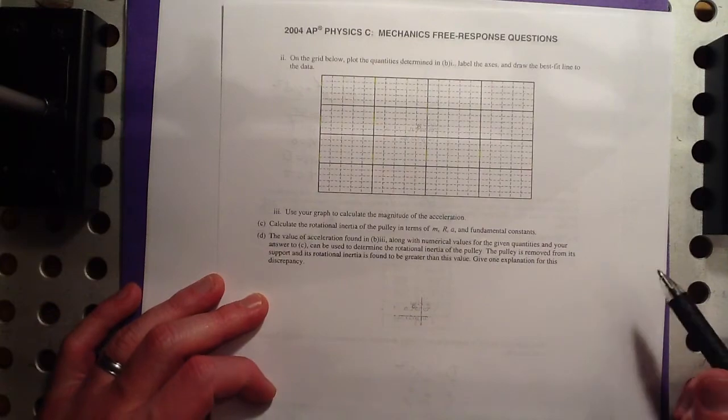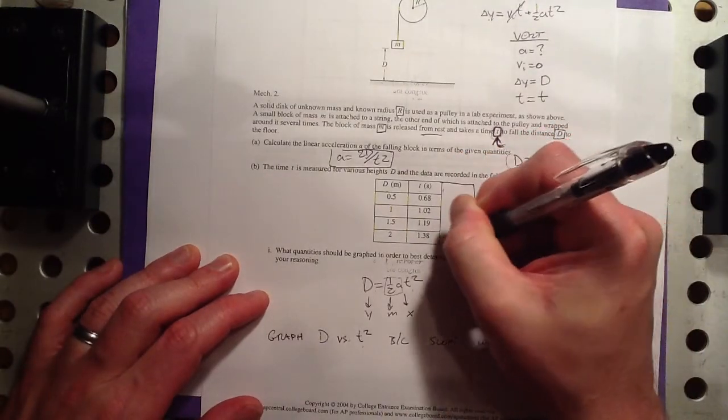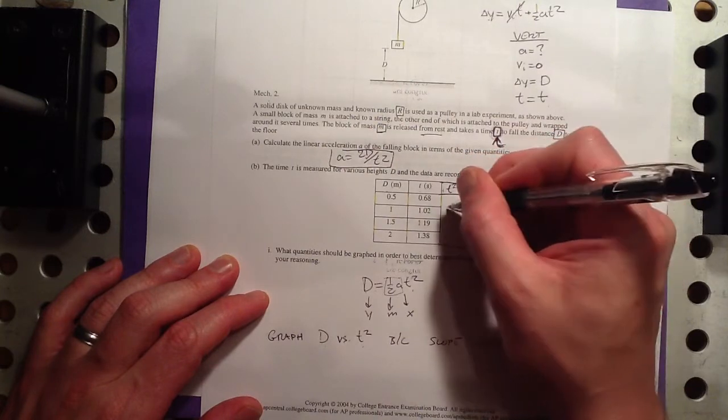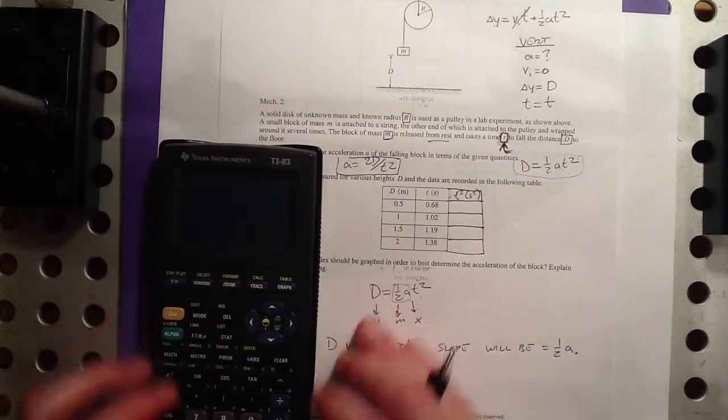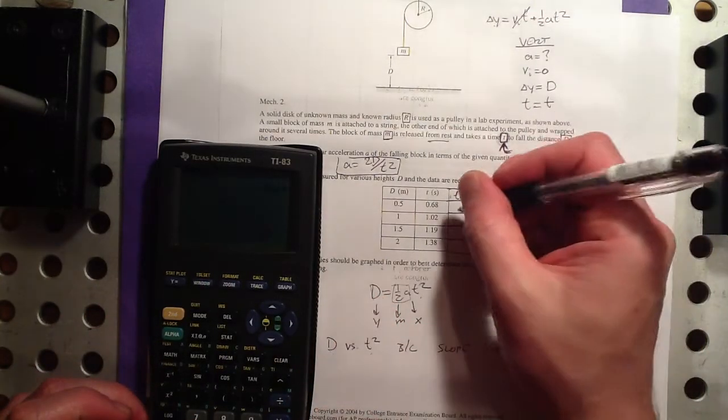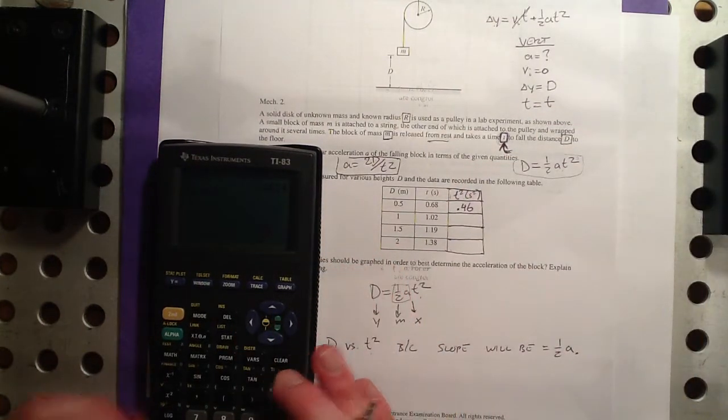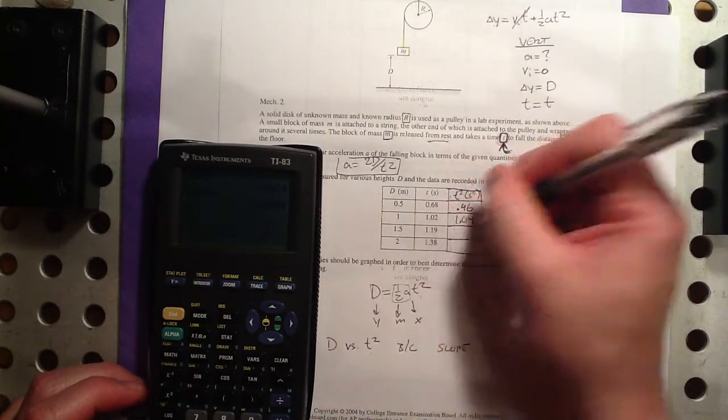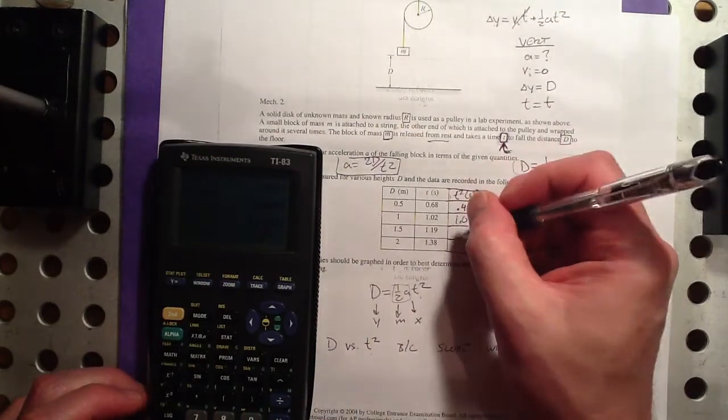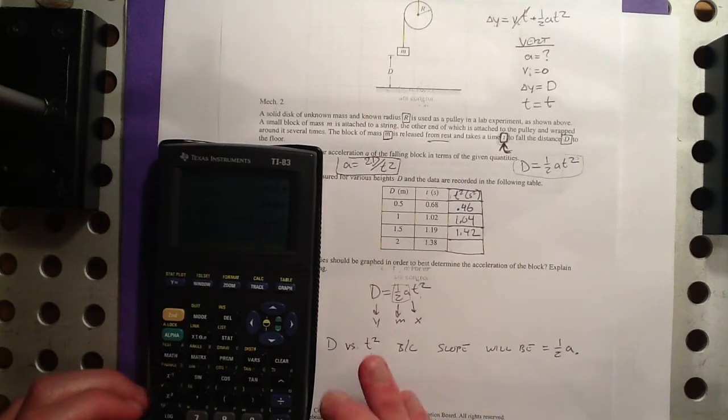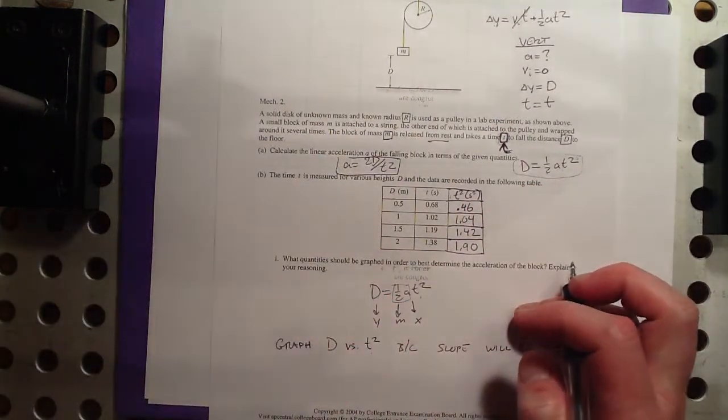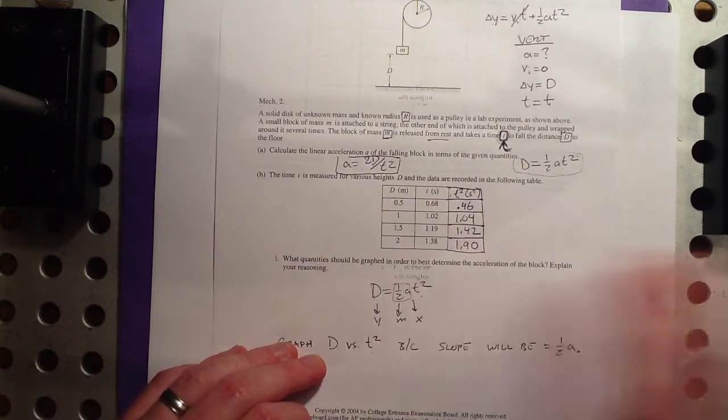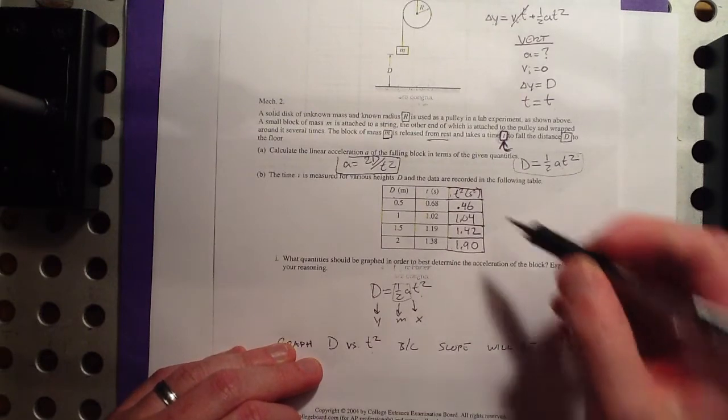On the grid below, plot the quantities determined in B1 and draw the best fit line to the data. Well, let's see. I'm going to add to this T squared, which would be seconds squared. So I have my ordered pairs. And let's quickly get those values.